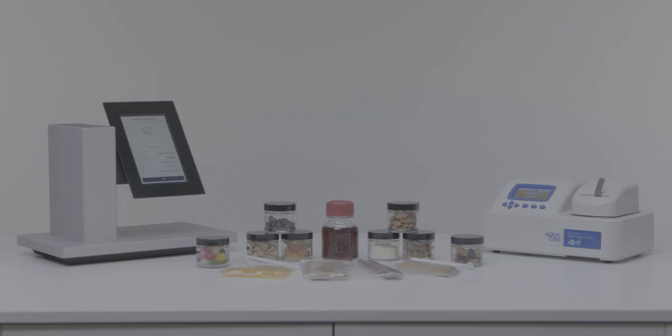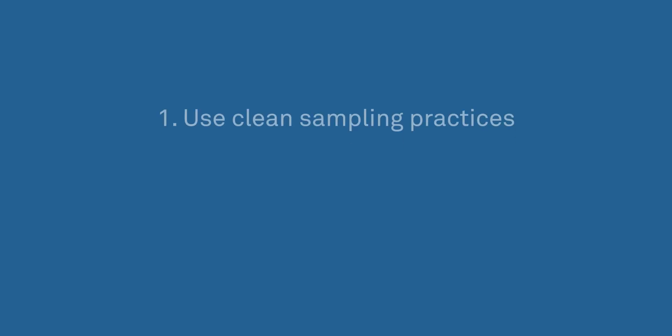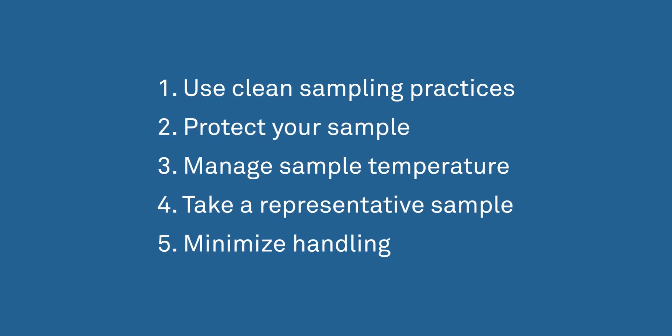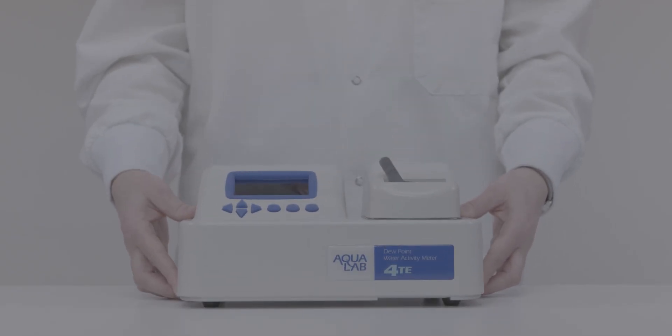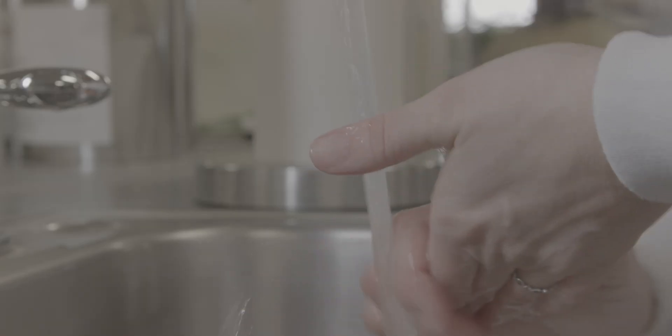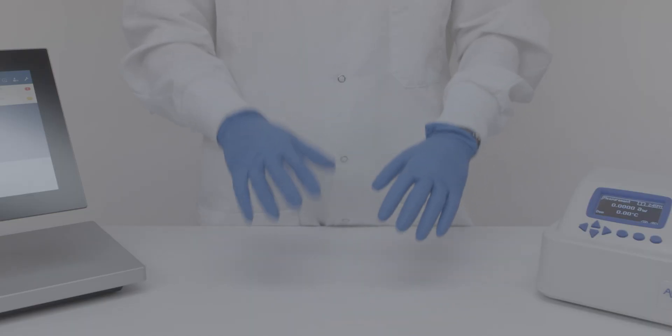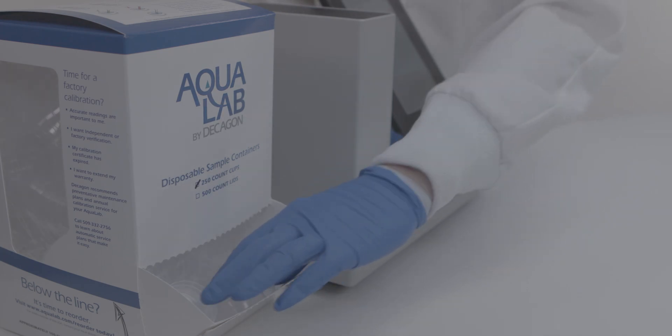Before we actually take some sample measurements, we'd like to talk about sample preparation. When we tested how sample prep affects water activity readings, we found five things that will improve the accuracy of your readings. One, use clean sampling practices. Place your instrument in a clean location. Make sure you have clean hands or wear lab gloves. Use a clean sample cup for each reading.